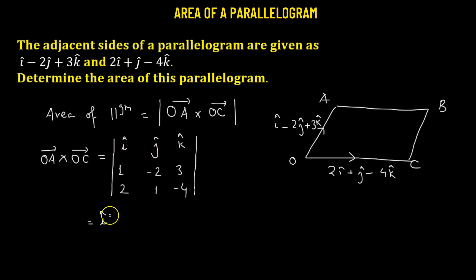So we have i cap. We will use the 2 by 2 determinant negative 2, 3, 1, negative 4, which can be obtained by ignoring the first row and the first column. So we cross multiply. We have negative 2 times negative 4, so that's 8 minus 3 times 1, so that's simply 3. Then we have negative j cap.